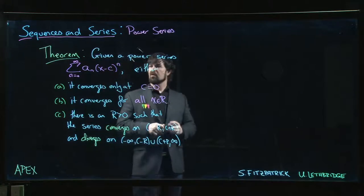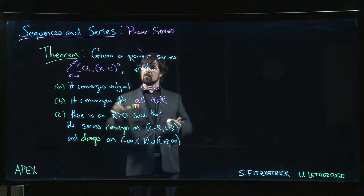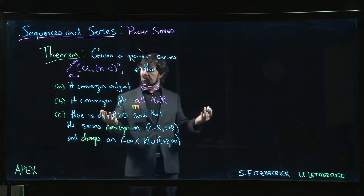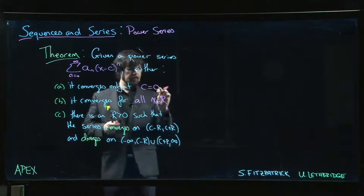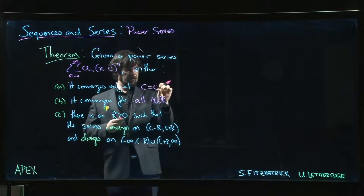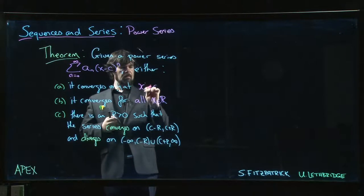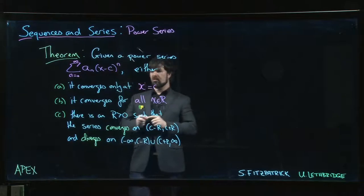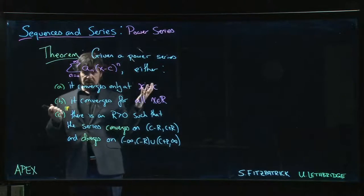It turns out there are exactly three possibilities. Either it only converges at X equal to C. So either it only converges at X equal to C, which is kind of the boring case. That means X minus C is equal to zero, so the whole thing is just zero.